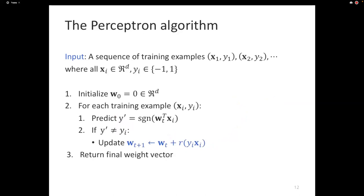Like any mistake-driven algorithm, we check for a mistake. If y-hat is not equal to yi, you perform the famous perceptron update. The update is: wt+1 = wt + R · yi · xi. Yi is the label (minus 1 or plus 1), xi is the input vector, and R is a single real number. You keep doing this until you run out of examples, and the final weight vector is what the algorithm returns.